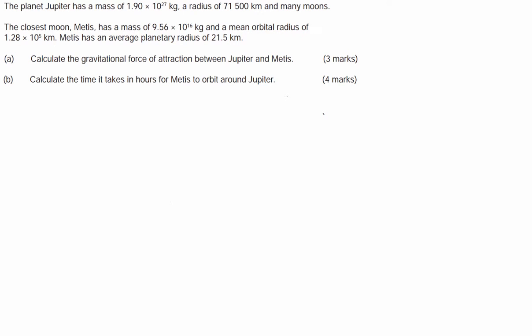G'day guys, we've got a planetary motion question today where we've got Jupiter with mass and radius of 71,000, and it has many moons. The closest moon, Metis, has a mass of 9.56 times 10 to the 16 and a mean orbital radius of 1.28 times 10 to the 5. Metis has an average planetary radius of 21.5 kilometres.